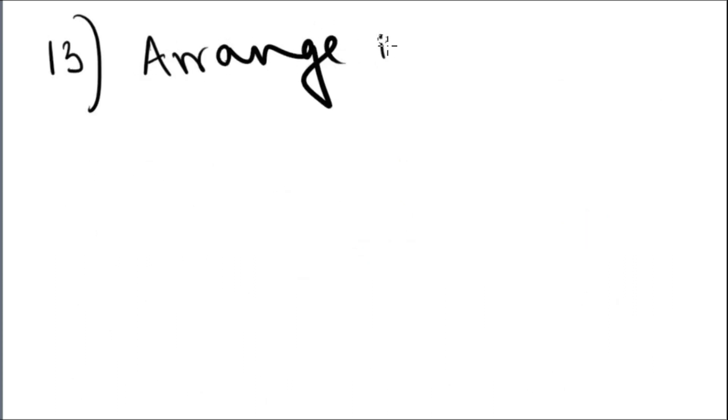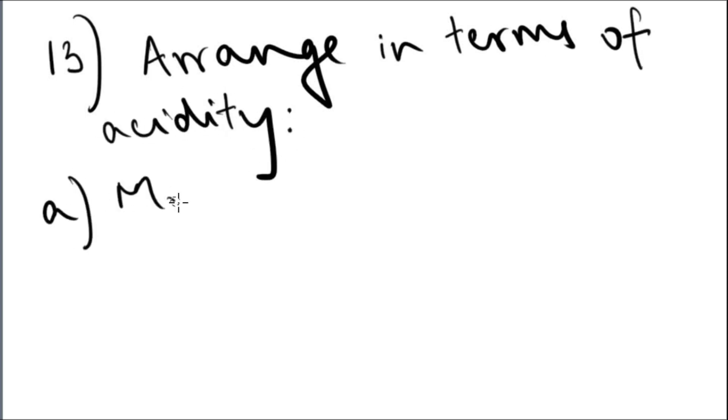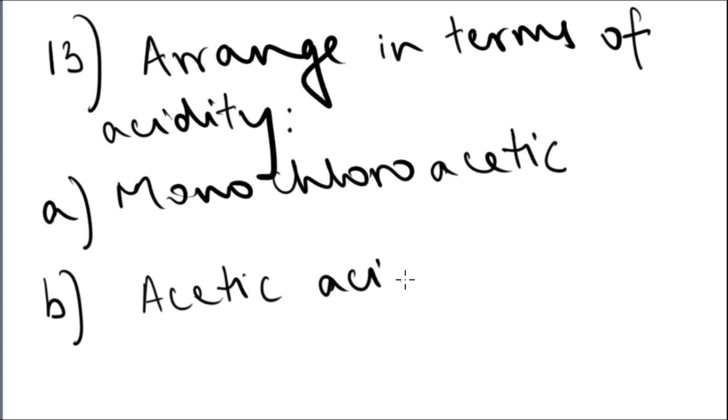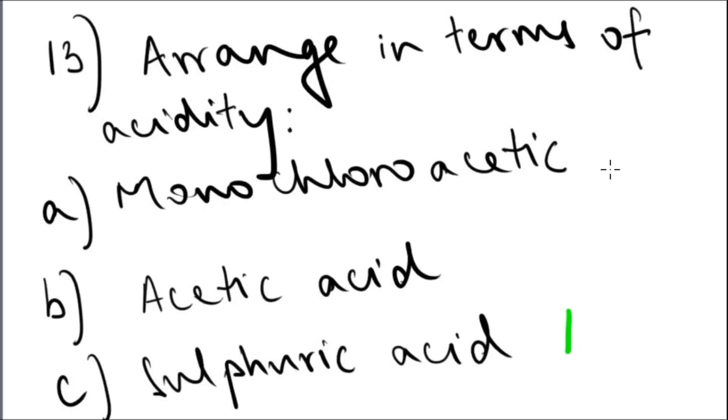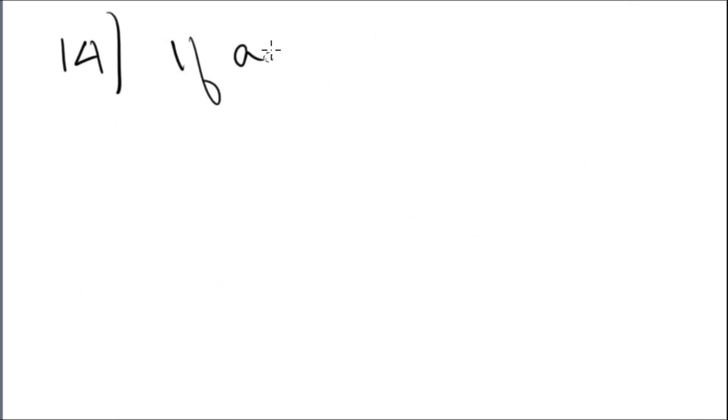Question 13: arrange the following in terms of decreasing acidity. You have a) monochloroacetic acid, b) acetic acid, and c) sulfuric acid. So sulfuric acid is the strongest, followed by monochloroacetic, and then acetic.